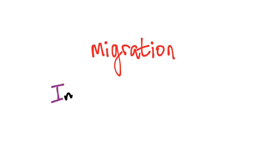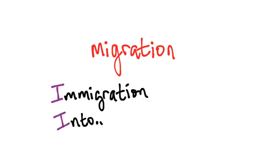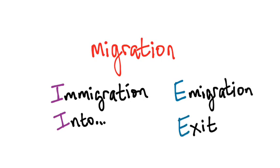The next effect is migration — movement in or out of an area. Here's a way to remember the difference: immigration, with an 'I', means movement into an area or country. And emigration is when one exits their country and goes to another.